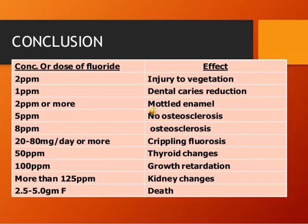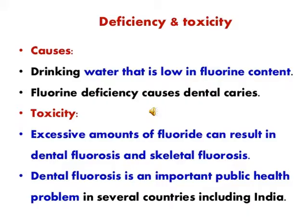The concentration or dose of fluoride has different effects. At 1 part per million, it causes dental caries reduction. At 2 parts per million, it can cause injury to vegetation and mottled enamel. At 5 parts per million or more, it can cause osteosclerosis, skeletal fluorosis, thyroid changes, growth retardation, kidney changes, and even death. Fluorine deficiency can cause dental caries, while excess can cause osteosclerosis and skeletal fluorosis.